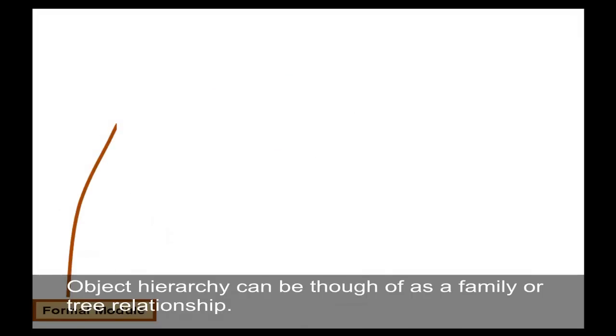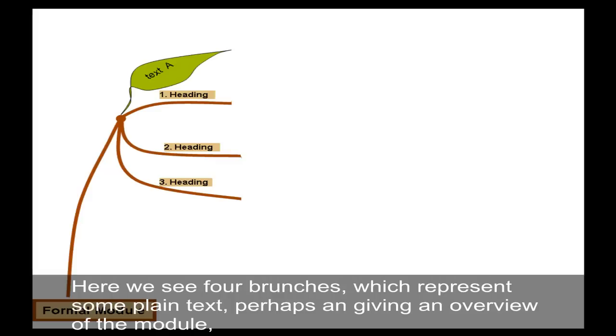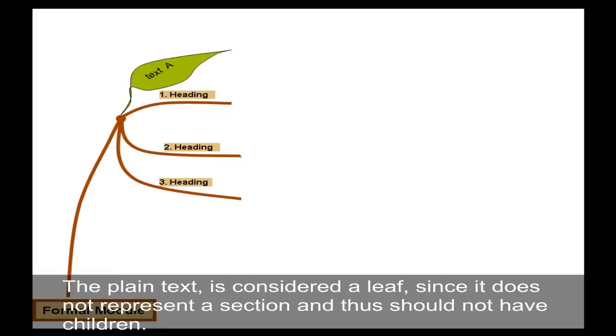Object hierarchy can be thought of as a family or tree relationship. At the root, we have the Formal Module. Next, we have the branches of the tree. Here we see four branches, which represent some plain text, perhaps giving an overview of the module, and three headings organizing the Formal Module in sections. Here, the plain text and the headings are considered siblings. They are all at the same level, level 1. The plain text is considered a leaf, since it does not represent a section and thus should not have children.